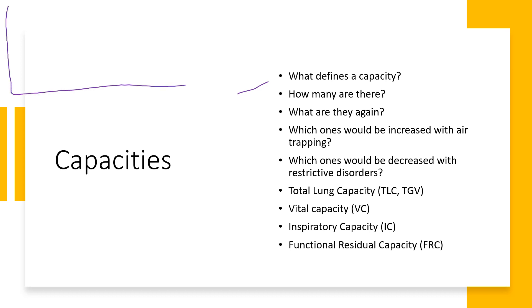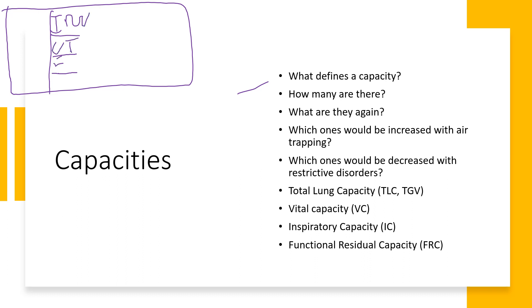Now moving to the four capacities. A capacity is defined as two or more lung volumes — I'll repeat that: a capacity is defined as two or more lung volumes. For example, total lung capacity (TLC) includes inspiratory reserve volume plus tidal volume plus expiratory reserve volume plus residual volume, so it meets the definition of a capacity. The lecture will continue with the remaining capacities.